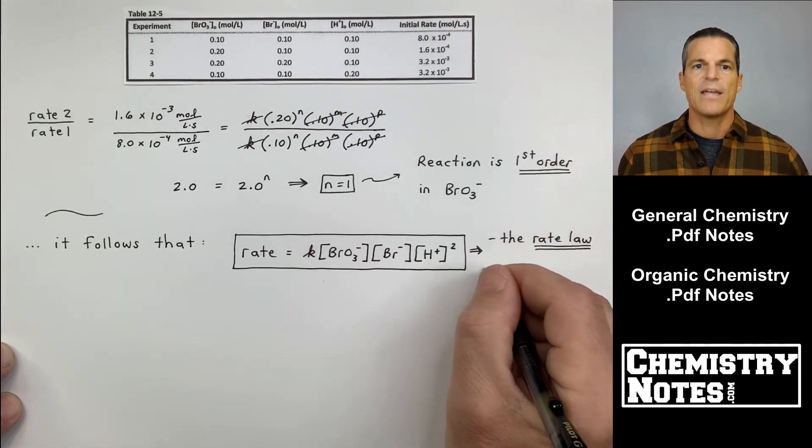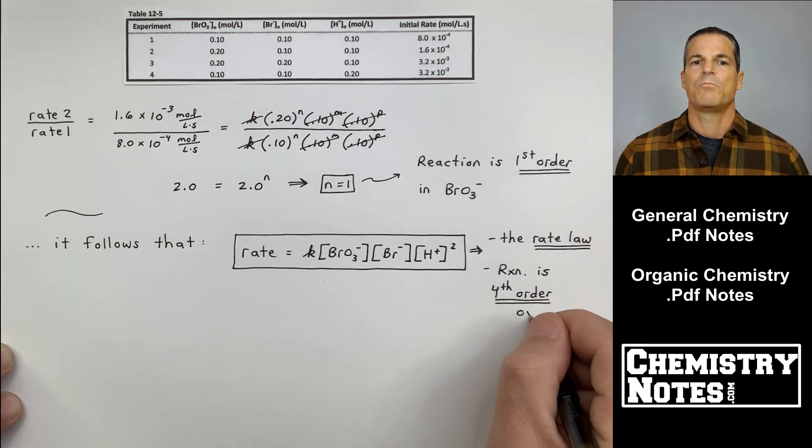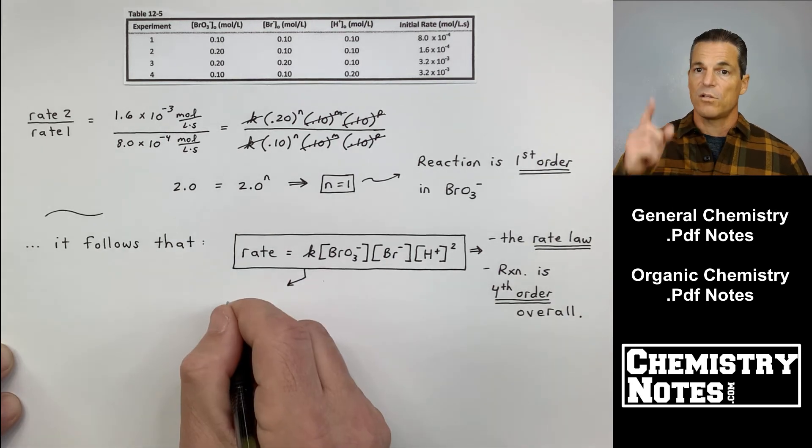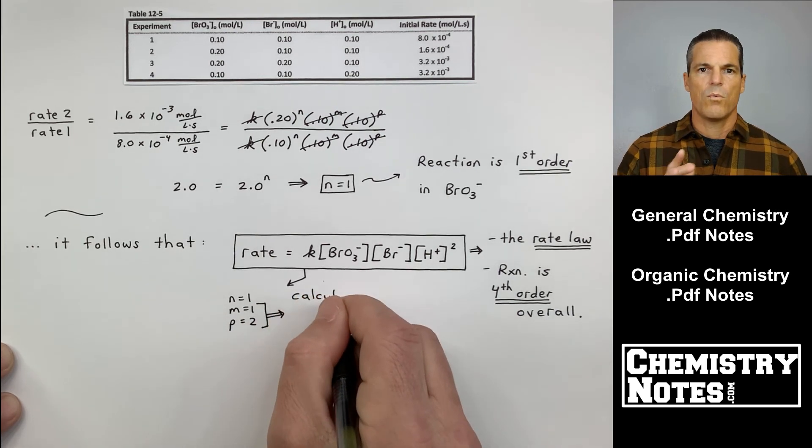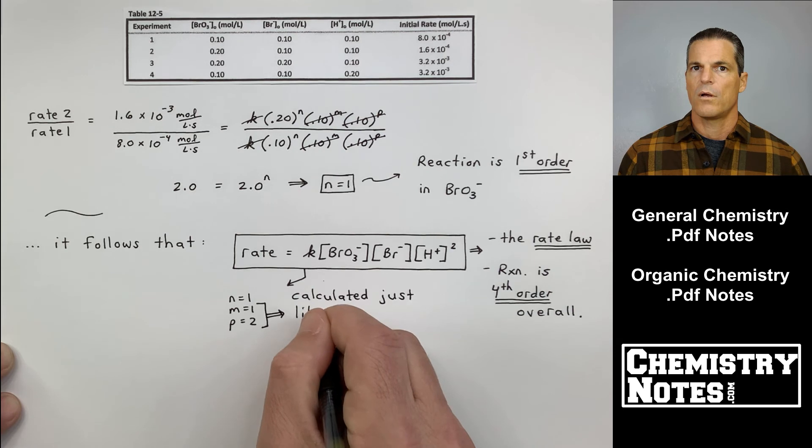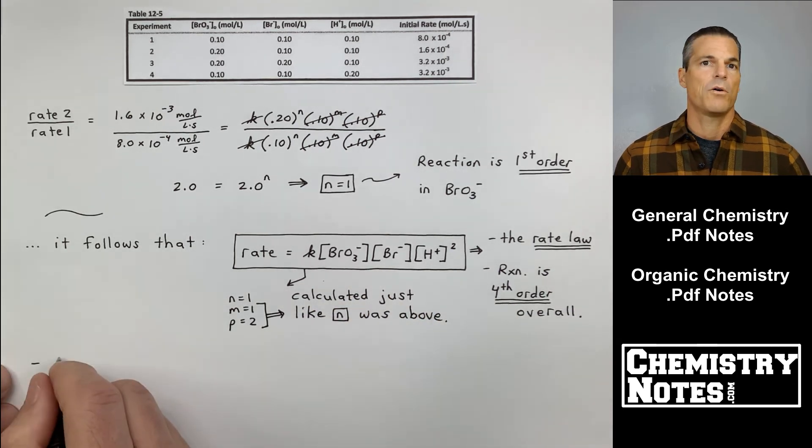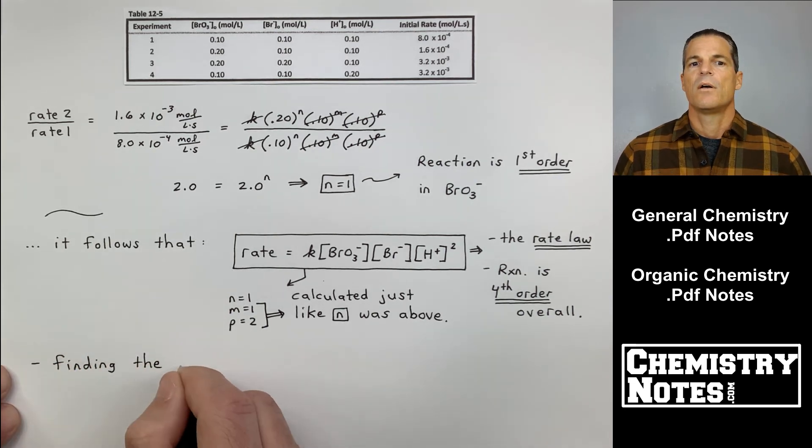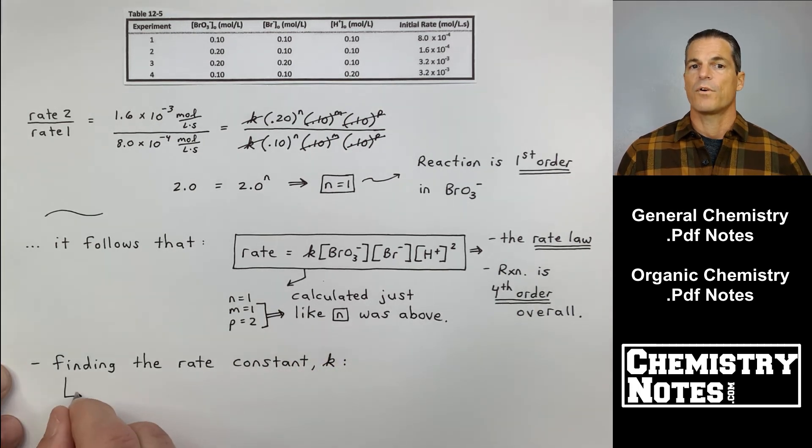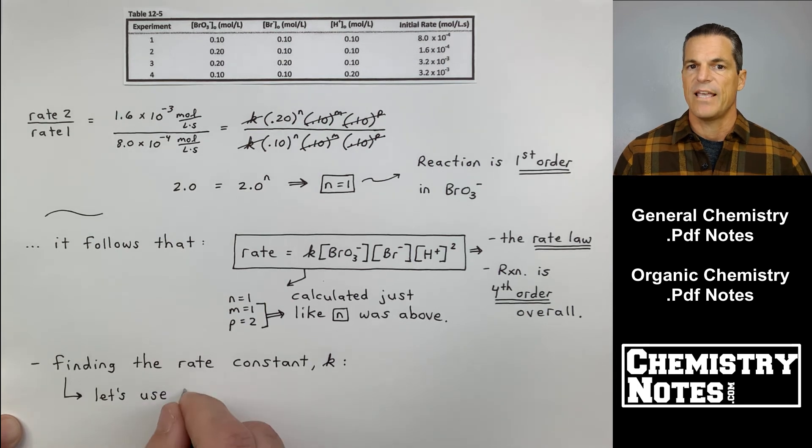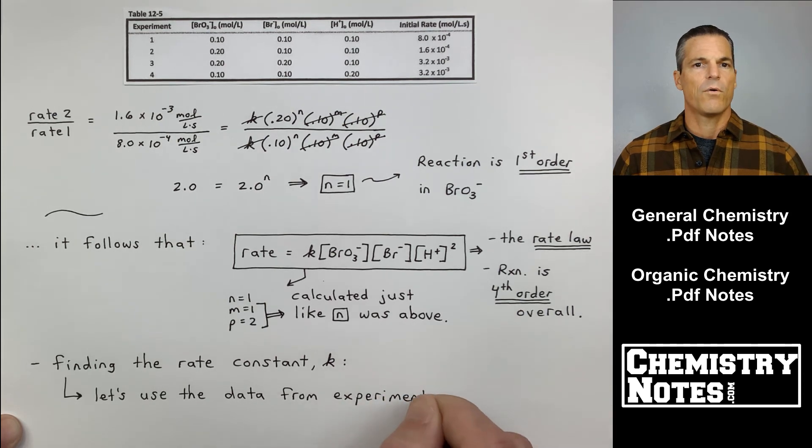If you do the same idea for M as in Mary and then for P, you get rate equals K times BrO3- to the 1, Br- to the 1, H+ to the 2. If you add all those up, 2, 1, and 1, the reaction is fourth order overall. To get the overall reaction order, you just add up all your individual orders. So if M is 1 and P is 2, then this reaction is first order in Br-, second order in H+. Like we said, it's first order in BrO3-, and it's overall fourth order.